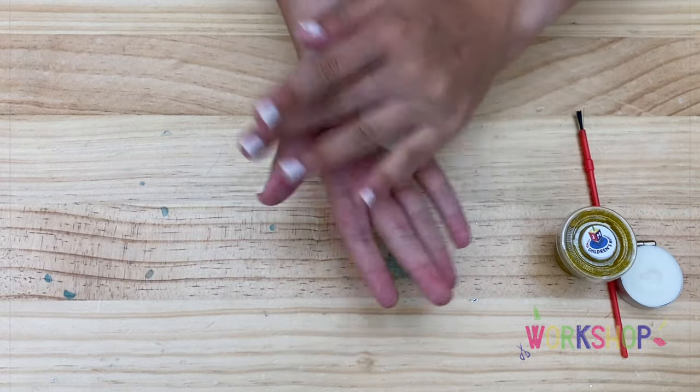Once we have a nice round ball, we will push the tea light into the ball to create a well, making sure none of the clay goes into the candle.